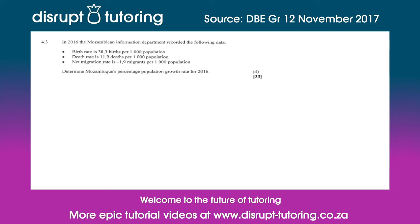This question is a data handling question which deals with population growth rate, and more specifically birth rate, death rate and migration. They have stated that in 2016 the Mozambican Information Department recorded the following data: Mozambique had a birth rate of 38.3 births per thousand in the population, a death rate of 11.9 deaths per thousand of population, and a net migration rate of negative 1.9 per thousand.